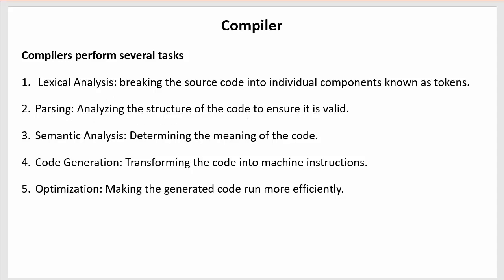Next is parsing — analyzing the structure of the code to ensure it is valid. The compiler checks whether the syntax is properly maintained, whether the correct keywords are used, and whether there are any spelling mistakes in the code. Next is semantic analysis — determining the meaning of the code. After these steps comes code generation, which transforms the code into machine instructions that the machine can understand.